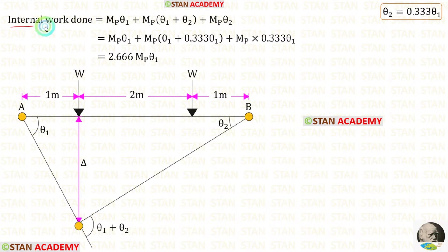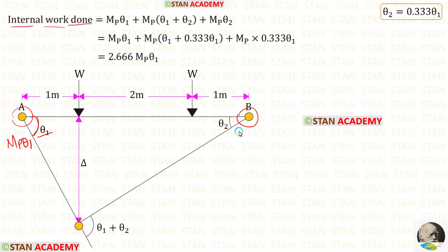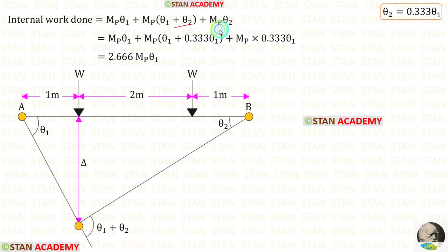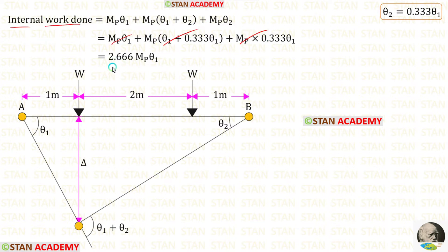Now let us find the internal work done. At point A we have a plastic hinge — we multiply mb with angle theta1. At point B we have a plastic hinge — we multiply mb with angle theta2. We have to add these three terms. Substituting theta2 as 0.333 theta1, the internal work done equals 2.666 mb theta1.